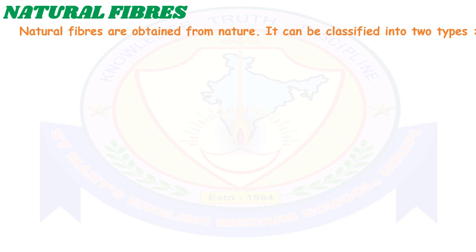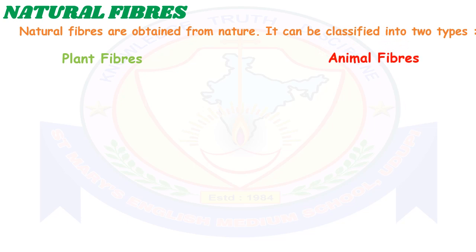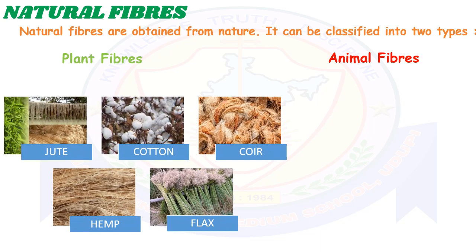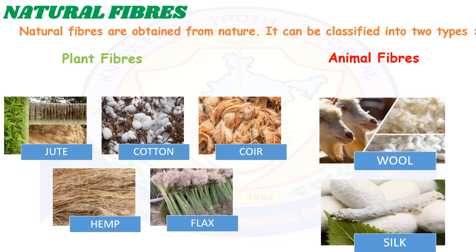Natural fibers are obtained from nature and can be classified into two types: plant fibers and animal fibers. The fibers obtained from plants are called plant fibers, such as jute, cotton, hemp, and flax. The fibers obtained from animal sources are called animal fibers, such as wool and silk.